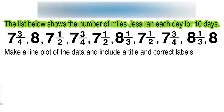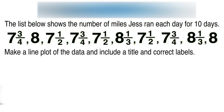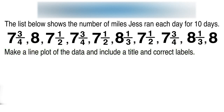These values represent the number of miles that Jess ran each day for 10 days. We have 10 values; some of them repeat and some don't — that's how many miles she ran on each particular day. What we have to do is make a line plot of the data that includes a title and correct labels. A line plot is a special kind of graph that shows frequency — how many times something occurs — in this case, how many times she ran a certain number of miles.